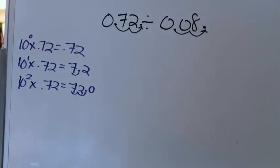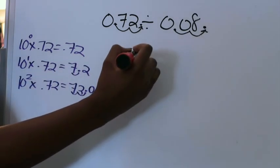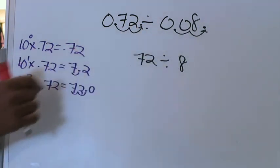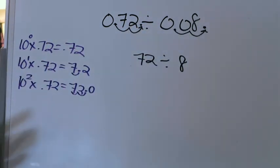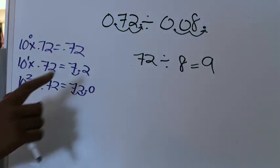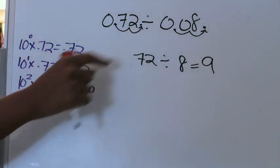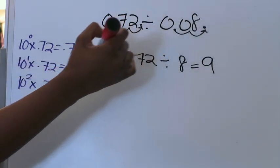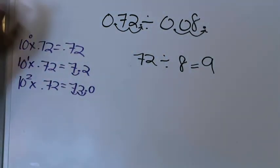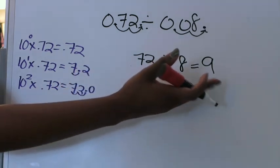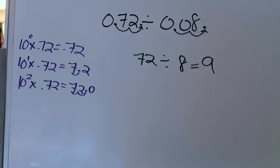So now instead of 72 hundredths divided by 8 hundredths, I can write this problem as 72 divided by 8, because this is now read as 8.0 or 8. That's a basic fact we should know — 72 divided by 8 is 9. And since I multiplied both my dividend and divisor by the same power of 10, which was 2, I know that my answer to the original problem is going to be the same as well. So the answer to 72 hundredths divided by 8 hundredths is in fact 9.